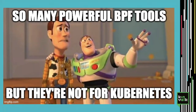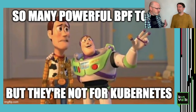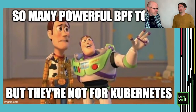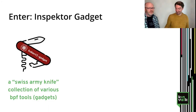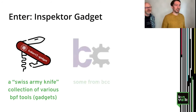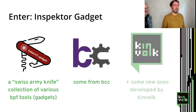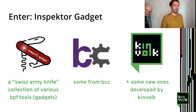With BCC and BPFTrace there are a lot of powerful tools that come off the shelf, but they don't know anything about containers or Kubernetes. So if you run Kubernetes and want to run them on your cluster, there is no easy way to use them. That's where Kinfolk's Inspector Gadget comes in — you can think of it as a Swiss army knife of BPF tools or gadgets for Kubernetes. Some come directly from BCC with a tiny wrapper to make them Kubernetes-aware, and some are developed by Kinfolk independently.